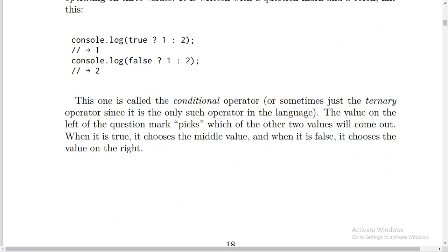This one is called the conditional operator, or sometimes just the ternary operator, since it is the only such operator in the language. The value on the left of the question mark picks which of the other two values will come out. When it's true, it chooses the middle value. When it's false, it chooses the value on the right.